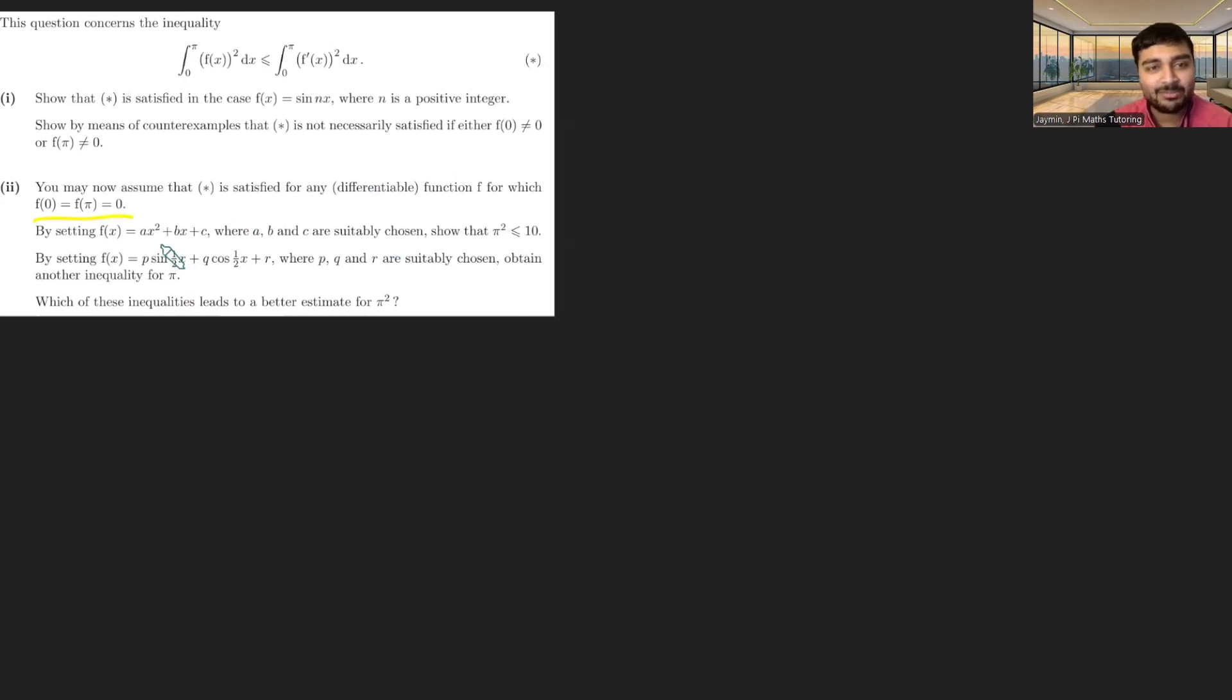Okay, let's start with part two. We want to deal with this quadratic. And we want to choose a, b, and c suitably. Well, if we're allowed to assume this fact here, ideally we want f(0) and f(π) to be zero. Well, if f(0) is zero, that just means c is zero. And if f(π) is zero, that means a·π² + b·π = 0. And if we just cancel out a pi, that means a·π + b = 0.